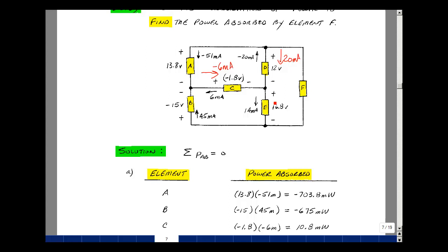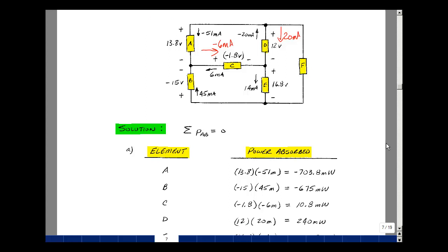And lastly, for element E, the current is entering the plus terminal coming out to minus, so the power absorbed is the product of 16.8 and 14 milliamps, and that's 235.2 milliwatts. You can see the calculations here below.